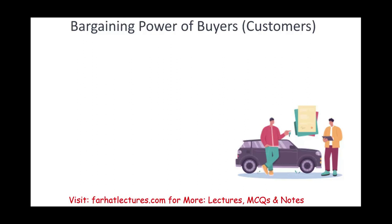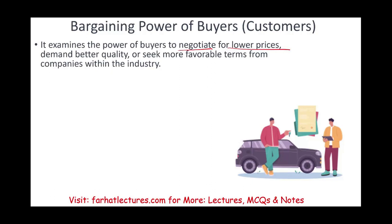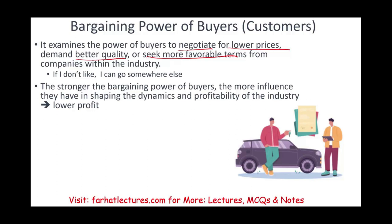The fourth force is the bargaining power of buyers — your customers. This force examines the power buyers have to negotiate for lower prices, demand better quality, or seek more favorable terms. Simply put, if a customer says 'I don't like this, I can go somewhere else,' they have more power. If they have no alternatives and must pay your price, then you have more bargaining power. Whether you're selling something generic or something unique matters, though it also depends on the buyer's perception. The stronger the bargaining power of buyers, the more they influence industry profitability — and the lower your profit.